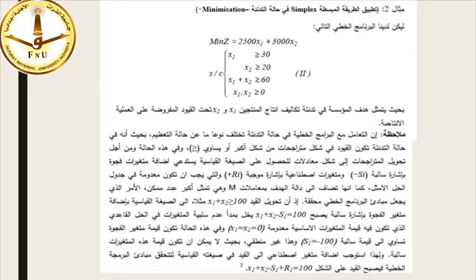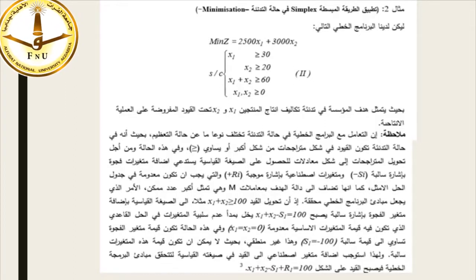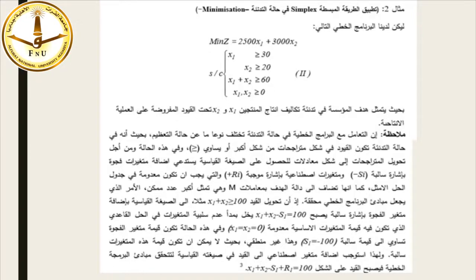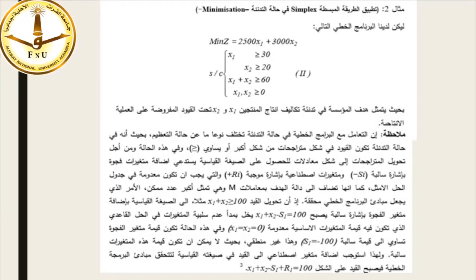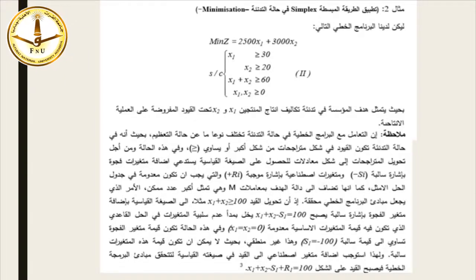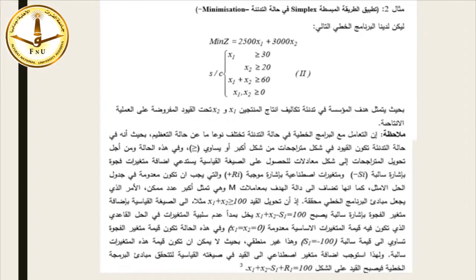ملاحظة: أن التعامل مع البرامج الخطية في حالة التدني يختلف نوعاً ما عن حالة التعظيم، بحيث أنه في حالة التدني تكون القيود في شكل متراجحات من شكل أكبر من أو يساوي. وفي هذه الحالة، من أجل تحويل المتراجحات إلى شكل معادلات للحصول على الصيغة القياسية، يستدعي إضافة متغيرات فجوة بإشارة سالبة وهي -Sj، ومتغيرات اصطناعية بإشارة موجبة وهي +Rj.